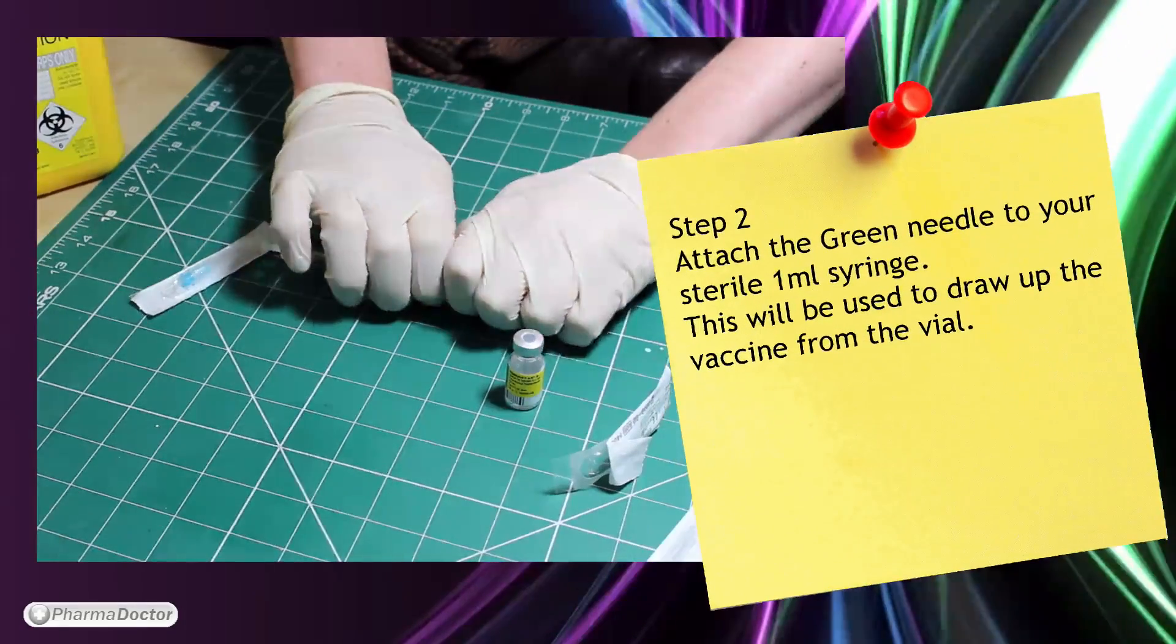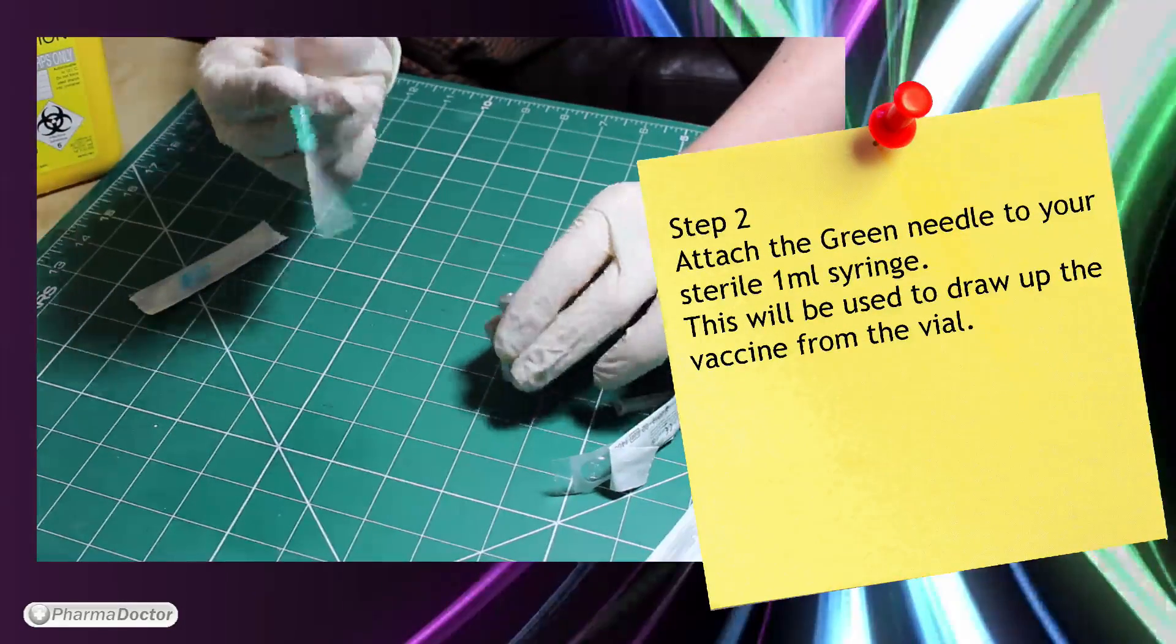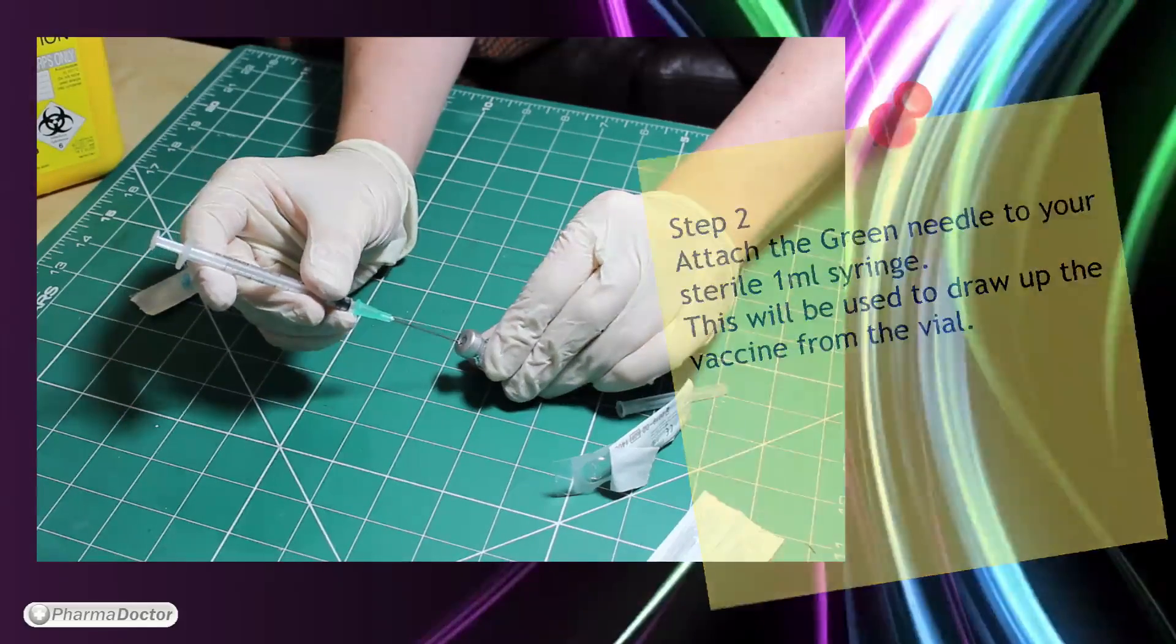Step 2. Attach the green needle to your sterile 1 ml syringe. This will be used to draw up the vaccine from the vial.